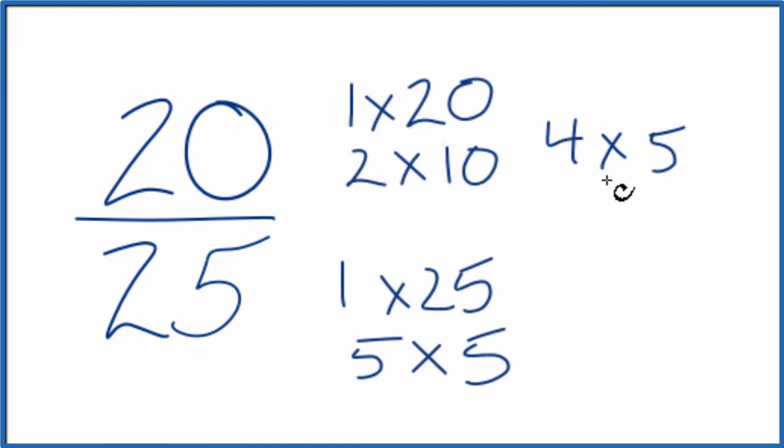I'm looking for a factor that goes into both 20 and 25, and I want to choose the greatest common factor. It looks like the greatest common factor is going to be 5.